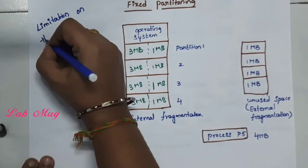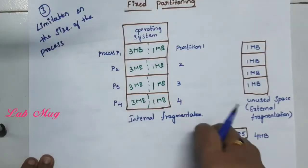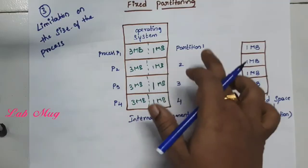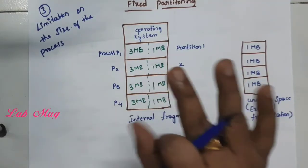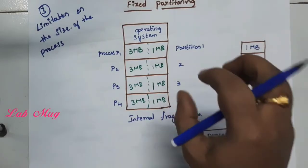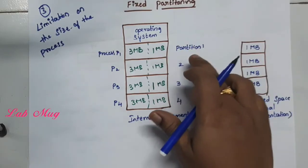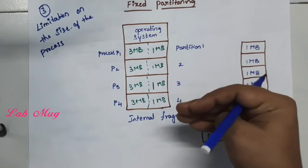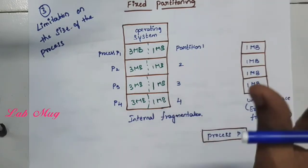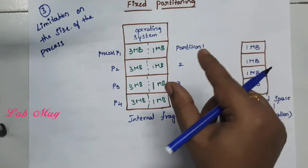The third drawback is limitation on size of the process. For example, if we fix a partition of 4MB, and the process we take is 3MB — we happily utilize 3MB and miss 1MB, leaving 1MB unused. But sometimes we need 5MB. Process P1 wants 5MB of memory to access. But the available fixed partition free memory is only 4MB. Since the needed memory is larger than the fixed partition maximum size, we cannot execute that partition or process. That process cannot be loaded into the memory. That is the limitation on the size of the process.